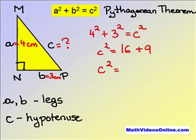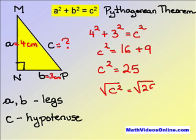C squared equals 16 plus 9, which is 25. Therefore, C will be equal to square root 25, which is 5 centimeters.